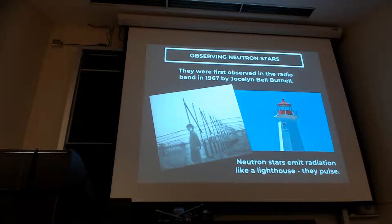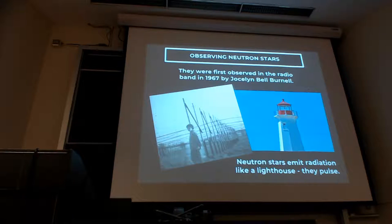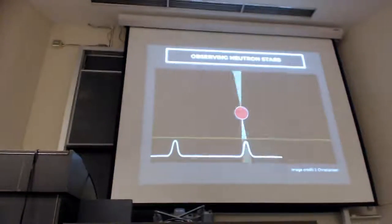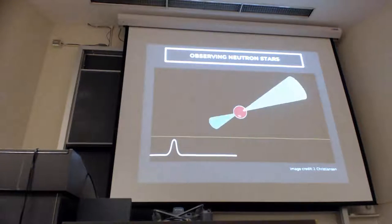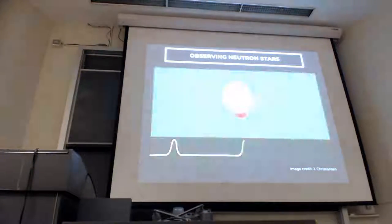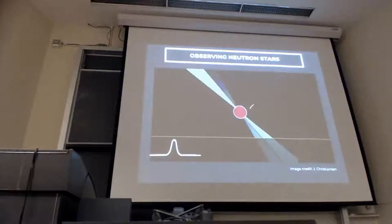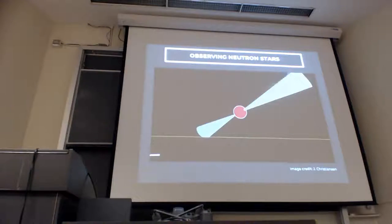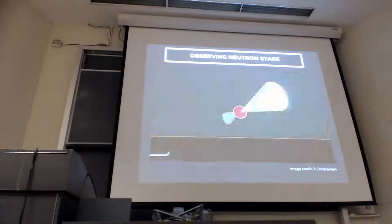Neutron stars emit radio waves because they have fast rotation and a magnetic field, and those two axes are not aligned — they have some kind of misalignment angle. This gives you a lighthouse effect where the beam sweeps over you, and you see the object pulse very much like a lighthouse. Every time this beam sweeps over Earth, we see this blip go up — that's exactly the radio pulse observed in the original radio data.